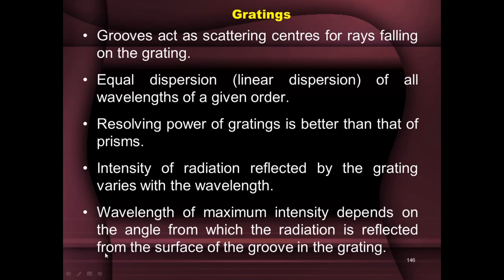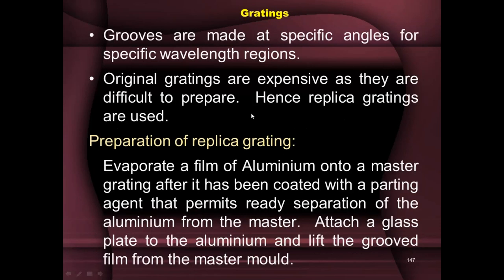The wavelength of maximum intensity depends on the angle from which the radiation is reflected from the surface of the groove in the grating. So the angle at which the groove is made is very important — it decides which wavelength will have maximum intensity, and as you move away from that wavelength, intensity goes on reducing. Grooves are made at specific angles for specific wavelength regions. For UV-visible and IR, the angles and number of lines differ significantly.